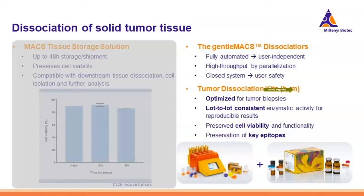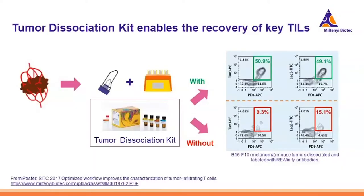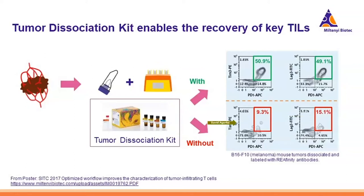An important point about tumor dissociation: tumors contain blood-derived tumor-infiltrating cells, and one might assume these loosely embedded cells don't require enzymatic treatment. However, comparing dissociation with and without enzymes in a mouse tumor — looking at T-cells including TIM-3/PD-1 positive ones — showed that without enzymes, even though these cells shouldn't be tightly connected to other cells, you do not recover them with mechanical dissociation alone. Using enzymes supports the whole dissociation process and yields many more T-cells.